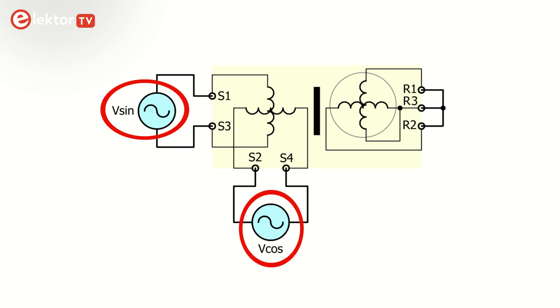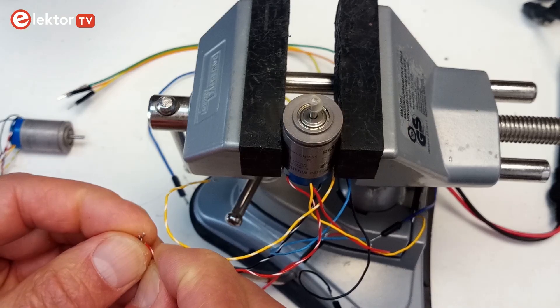When you put sine and cosine signals on the stator windings, while shorting the rotor windings, the resolver starts to spin. This brings us to a second application of resolvers. They can be used as repeaters.